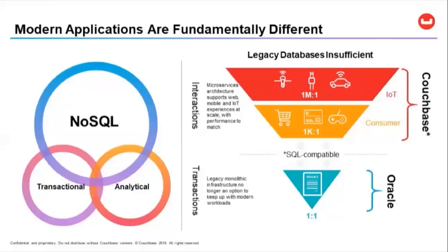We're talking about massively interactive and highly data-intensive applications today. Think of look-to-book ratios of about 1,000 to 1 for a given airline ticket transaction. Consumers are interacting with systems as they research flights, retrieving and creating new data at unprecedented rates. IoT machine-to-machine interactions increase orders of magnitude even beyond that. So very simply, legacy databases were not designed for these modern workloads and data structures.